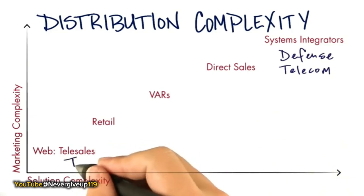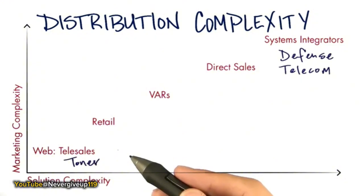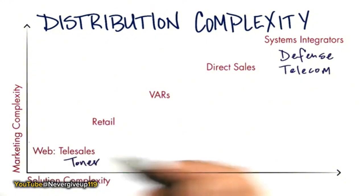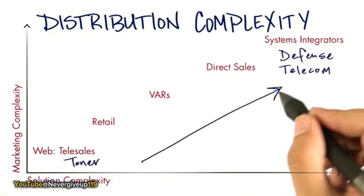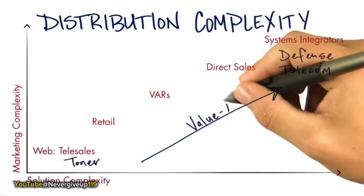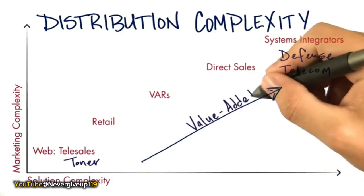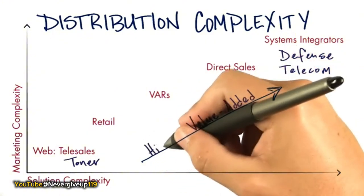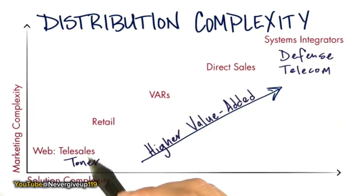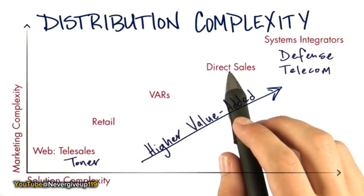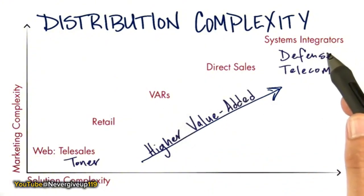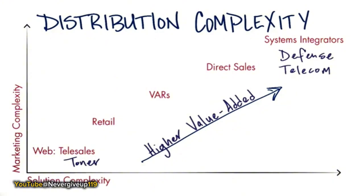On the other extreme is the complexity of selling toner over the web — incredibly simple. Consumers already know what they want, and the channel is simply there to fulfill end-user demand. The marketing message is just: toner for your printer. When we look at a sales channel, we talk about value-added — how much value is the channel adding? As we go up the curve, we see higher value-added at each step. Web and telesales add almost no value. Retail adds a little support. VARs add a lot of integration and support. Direct sales is a direct connection to your factory. System integrators not only support and integrate your products, but potentially tens of others.